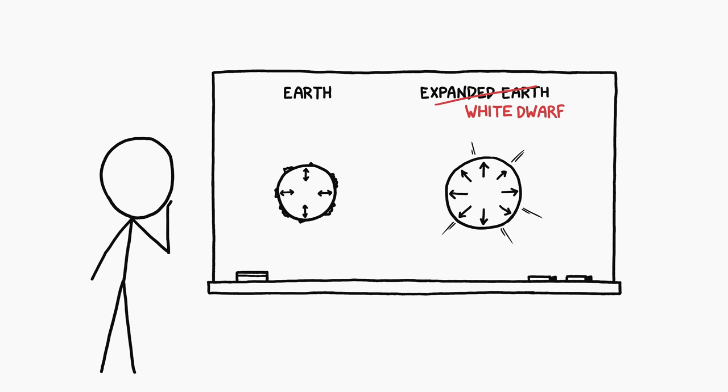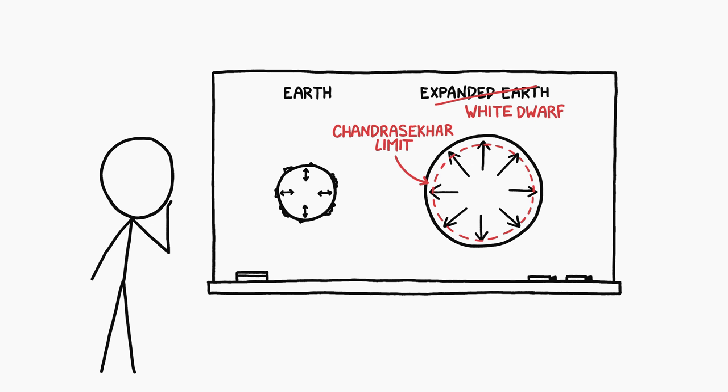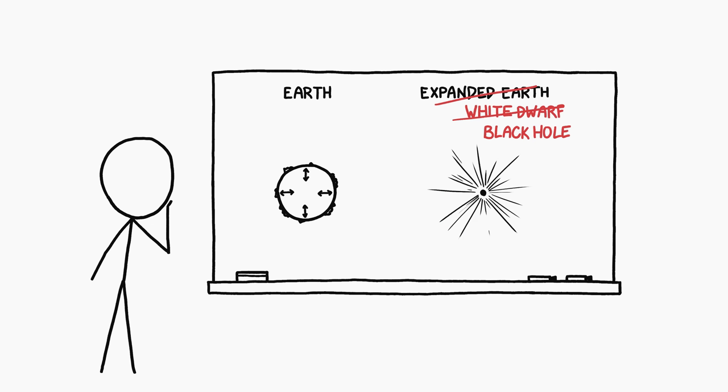Then, after around 1500 years of expansion, if the Earth's mass kept increasing according to the original premise, after 1500 years, the Earth would pass the Chandrasekhar limit for white dwarf stars and become a black hole.